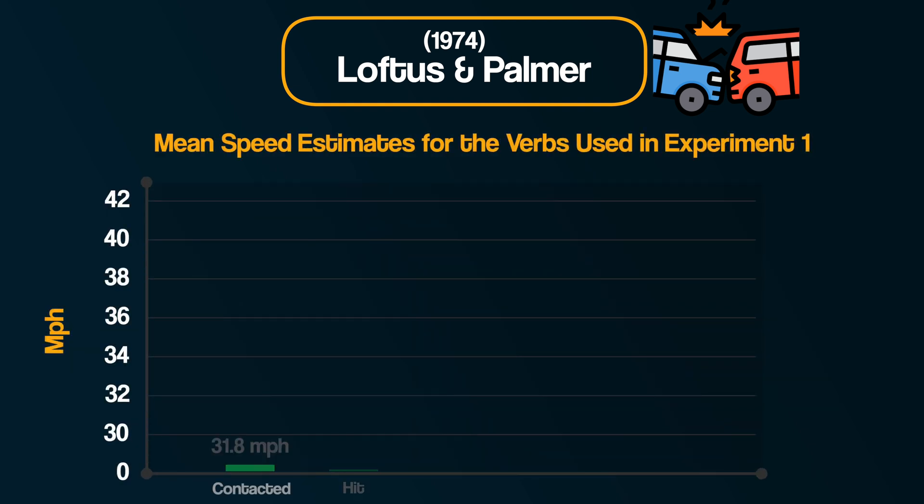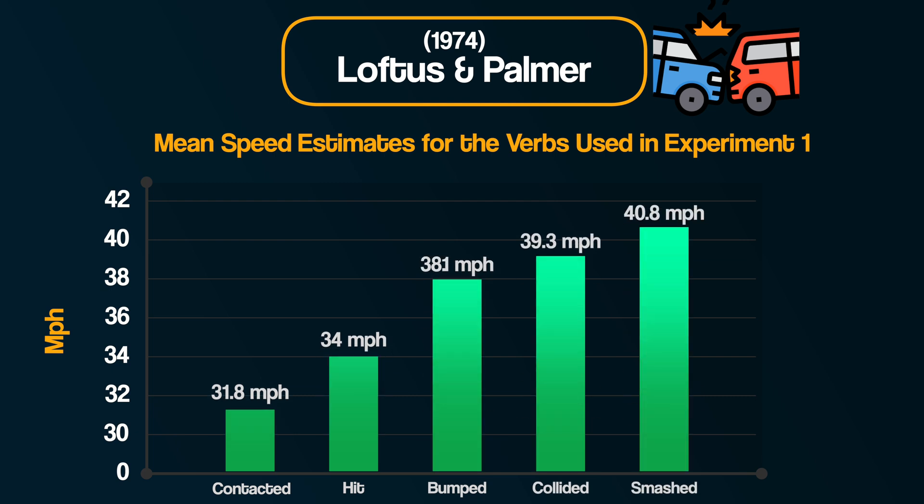Here's a graph showing the speed estimates from participants for each of the five conditions. When the verb 'smashed' was used, it led to a much higher estimate of speed than the other words. Notice how simply changing one word in a question can lead to markedly different responses, showing how eyewitness testimony can be affected by misinformation.